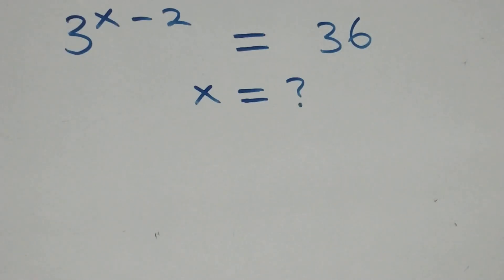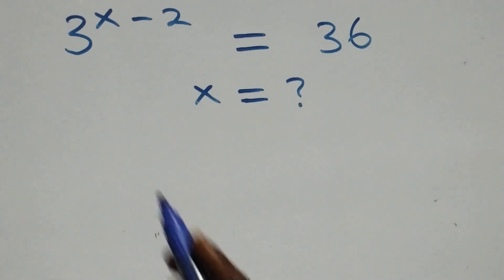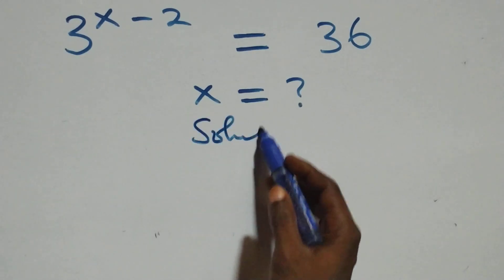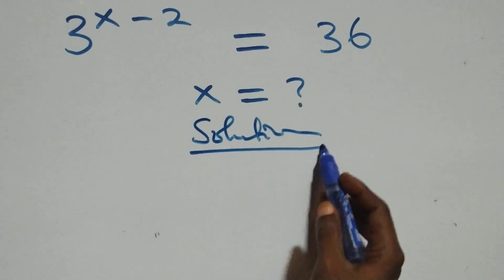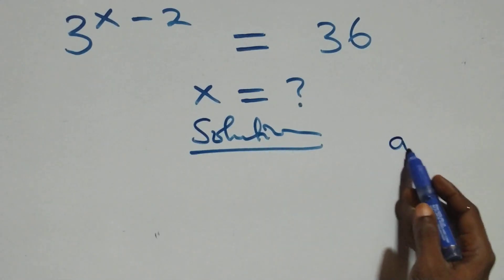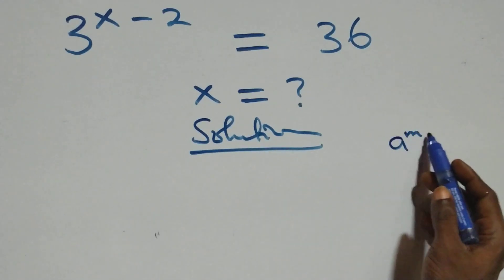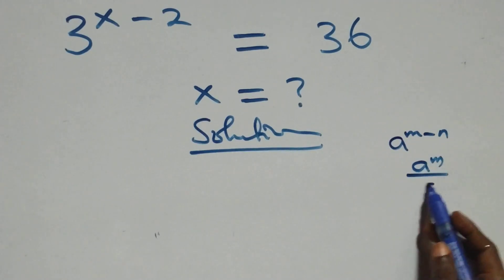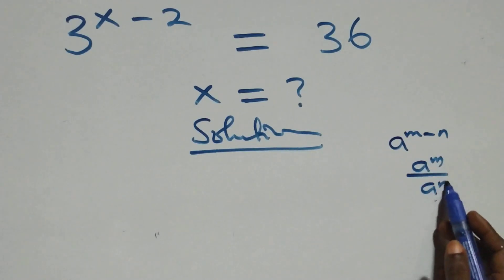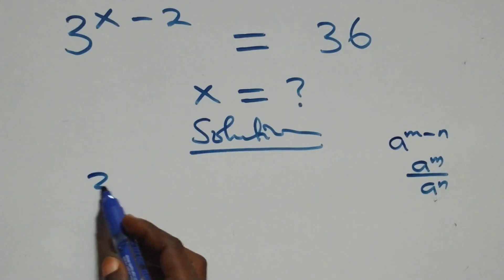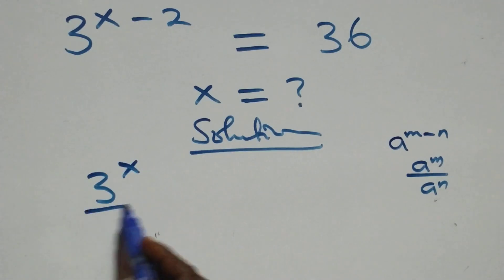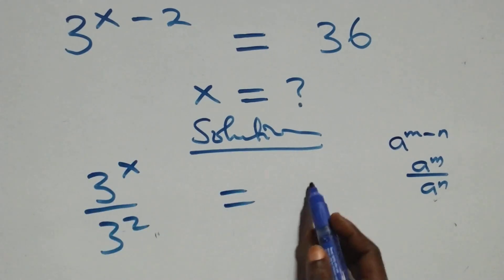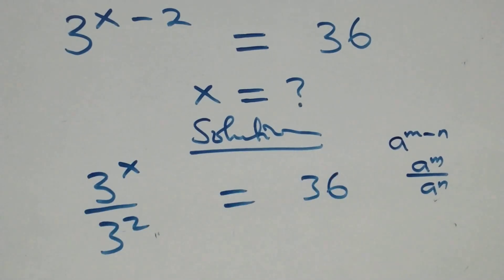Hello, you're welcome. How to solve this nice exponential equation. What we have here is: a raised to power n minus n results in a raised to power n over a raised to power n. This becomes 3 raised to power x over 3 squared equals 36 on this side.